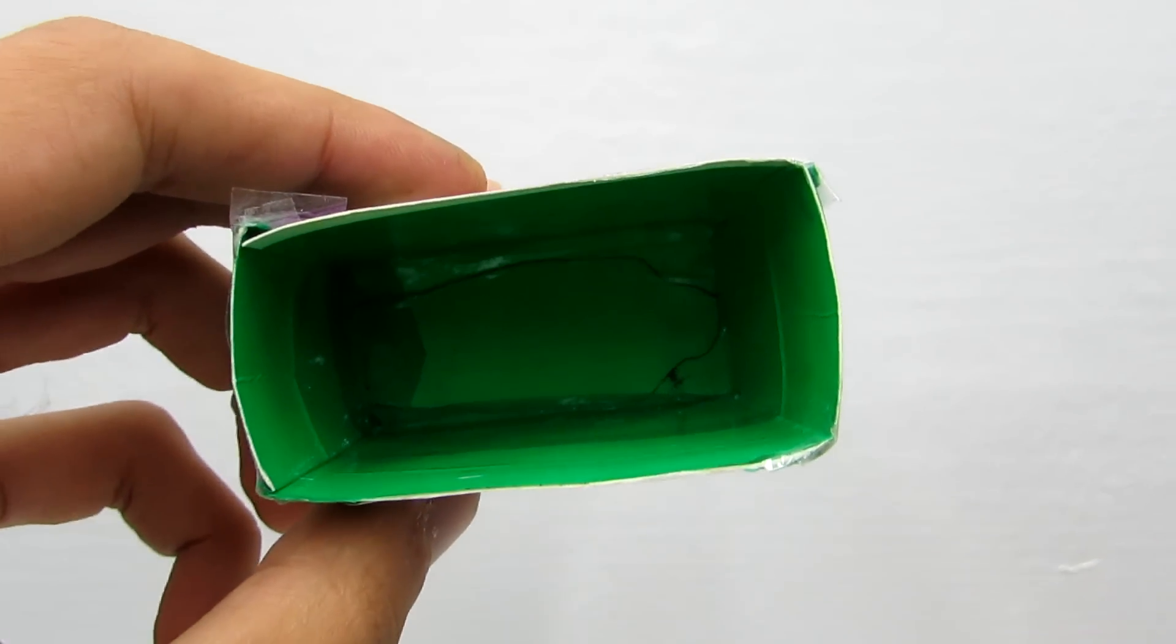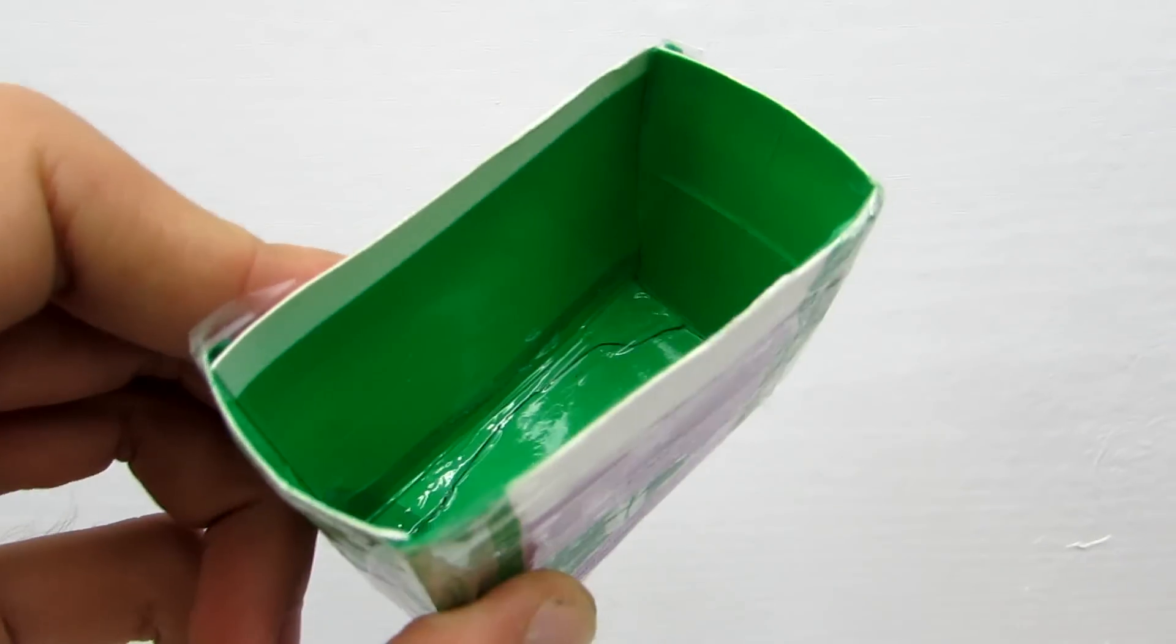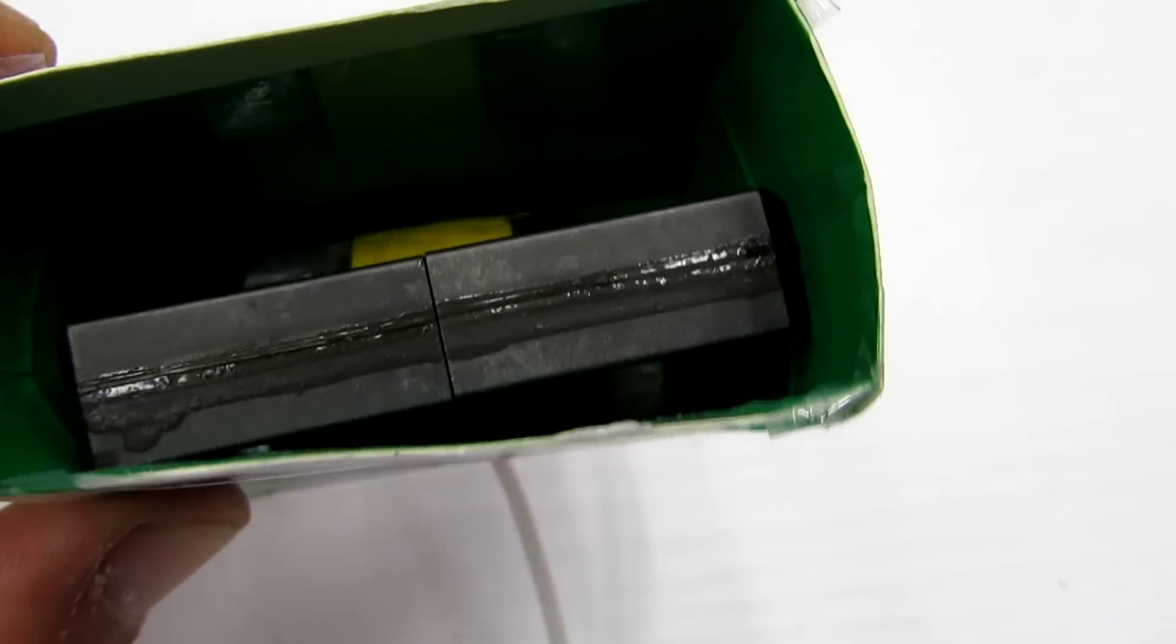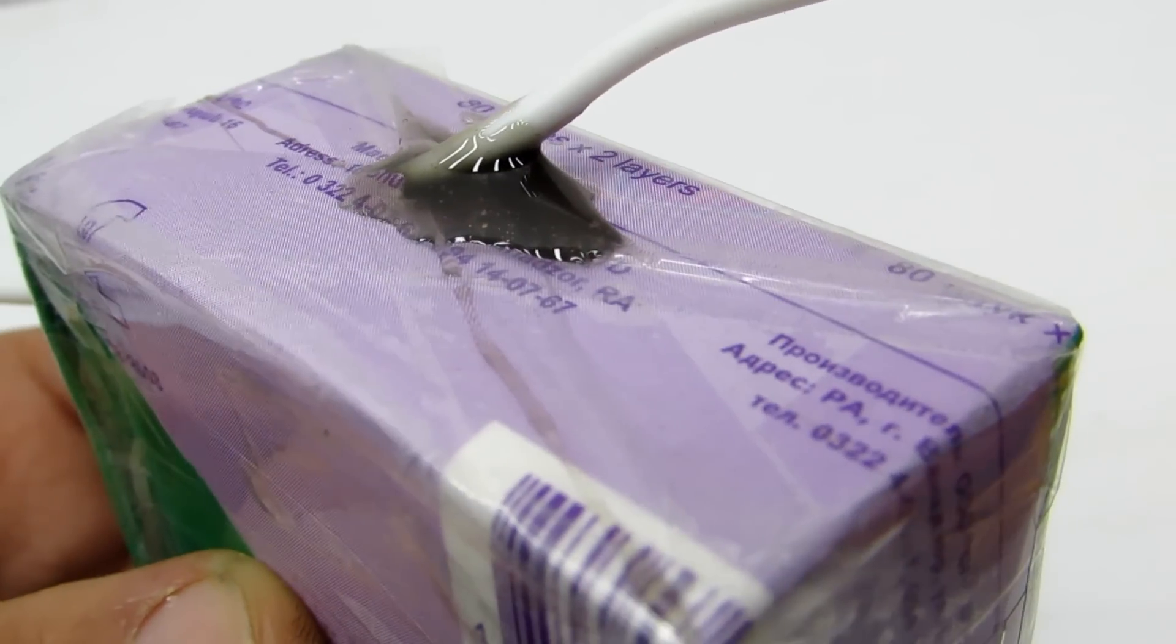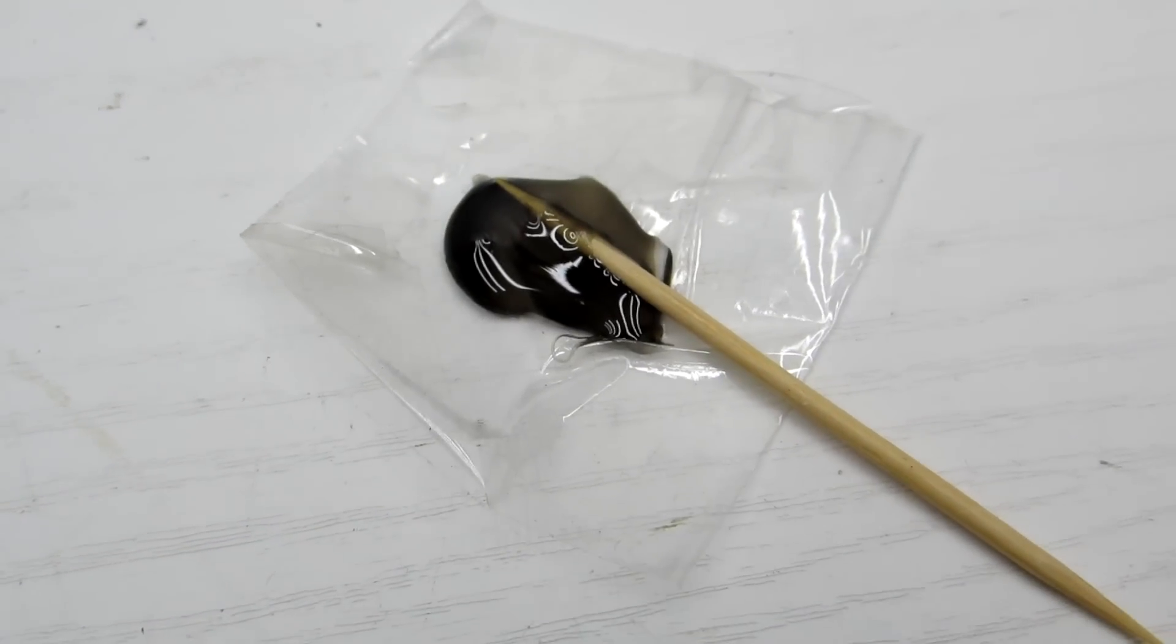Then I made a carton box in which we fill transformer with resin. Additionally, it is sealed with duct tape. Made two holes to output wires. They also sealed at first with quick-drying resin and then with additional glue.